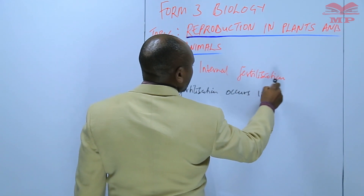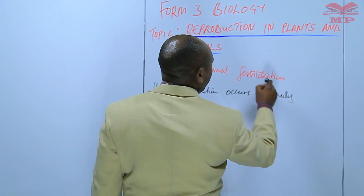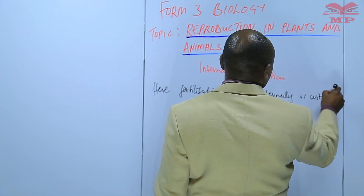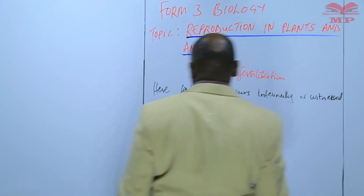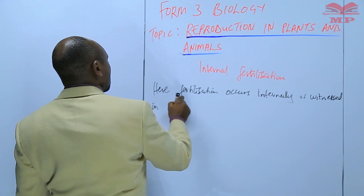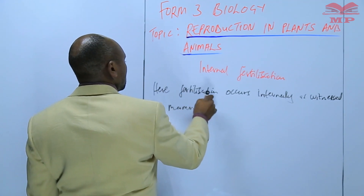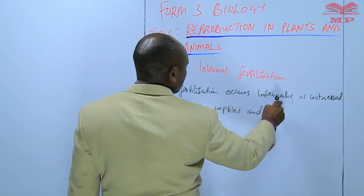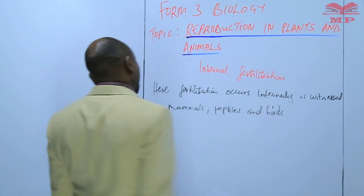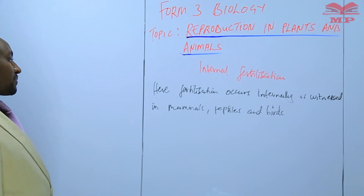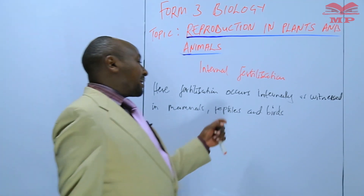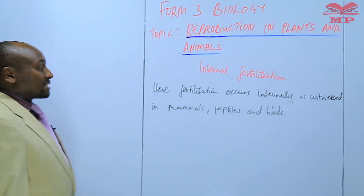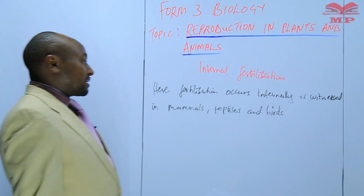So fertilization occurs internally as witnessed in mammals, reptiles and birds — that is class Mammalia, class Reptilia, and class Aves. Those three categories of animals have internal fertilization.